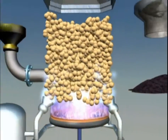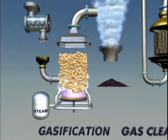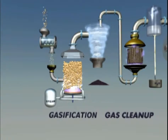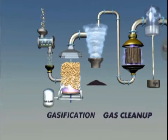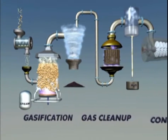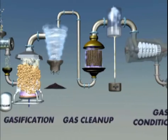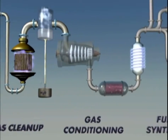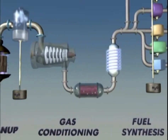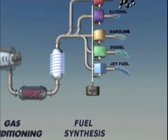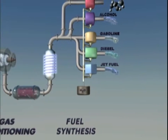One type of thermochemical conversion process is gasification, a method that uses heat to turn biomass into a hydrogen and carbon monoxide rich gas called synthesis gas, or syngas. This in turn is converted into liquid transportation fuels or other products.